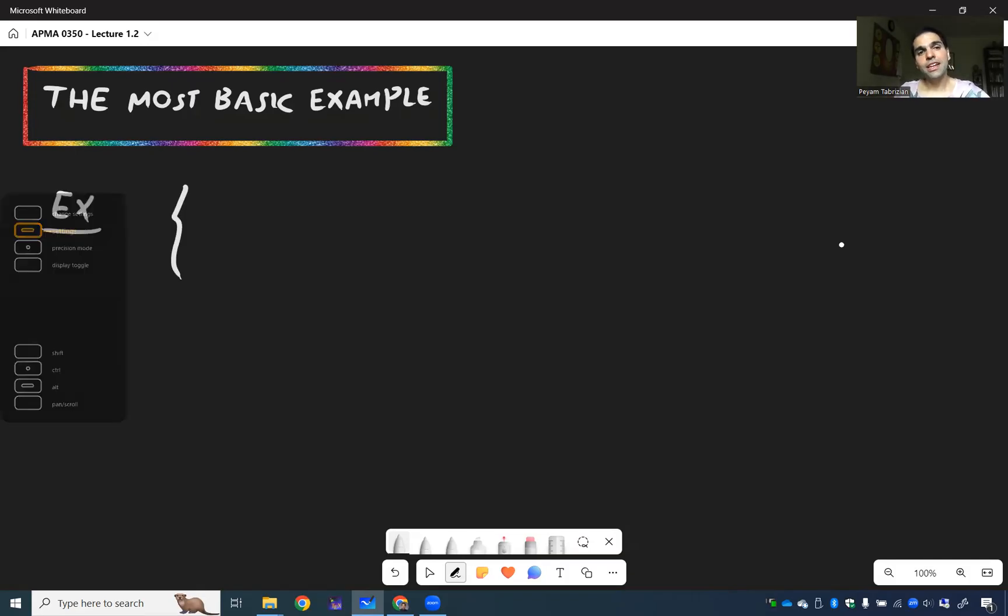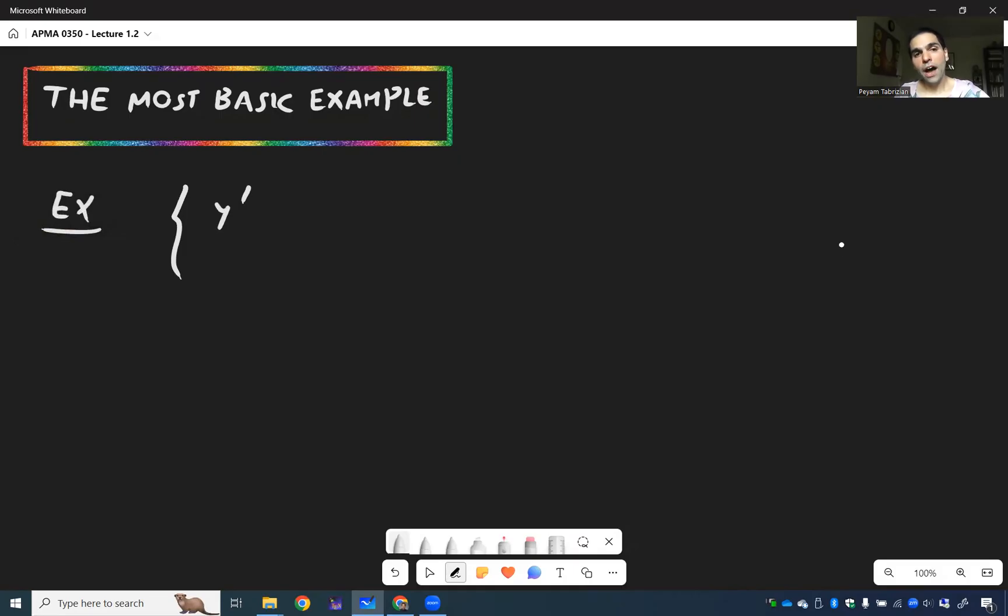So without further ado, let's try to solve y prime equals 2y, and then y of 0 equals 3.